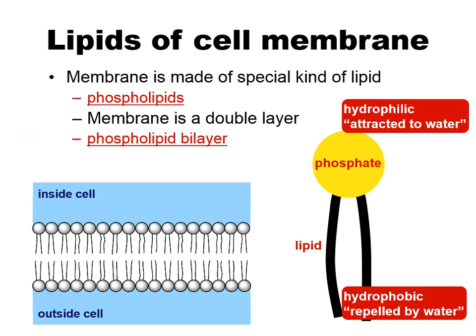When you put those all together in a watery environment — which is what your cells have on the outside and on the inside — what they do is form this bilayer, this kind of lipid sandwich. You've got your phosphate heads all facing out towards either the inside or the outside of the cell where it's watery, but the lipid tails all face in because they don't want to be near the water. They form this kind of barrier, this oil layer that prevents materials from moving easily back and forth.